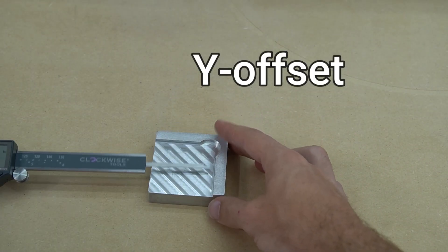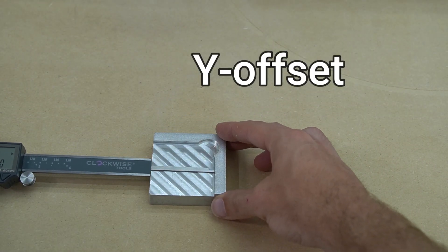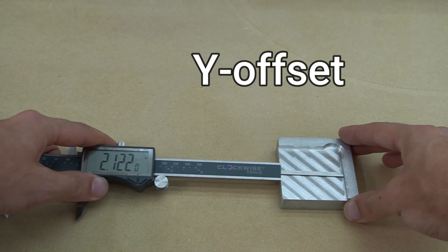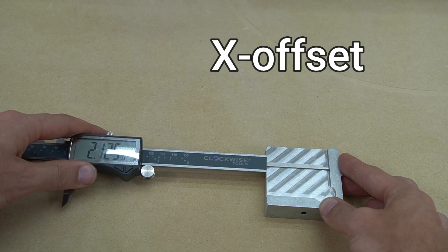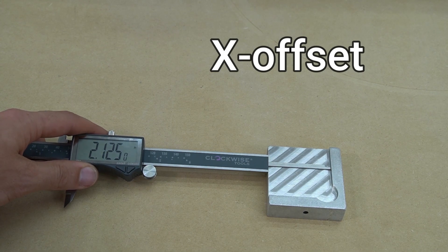We can measure our X and Y offsets by flipping the probe over and measuring the recessed area. Here we see our Y is 2.122, our X is 2.125.